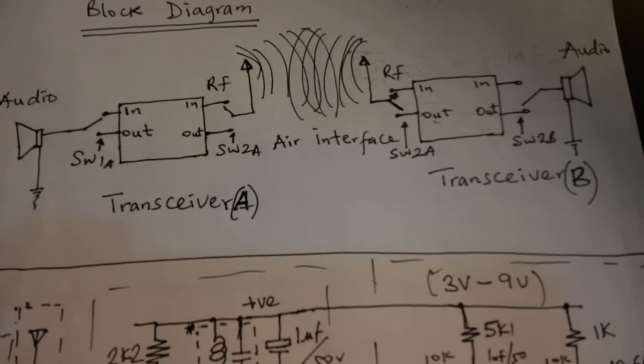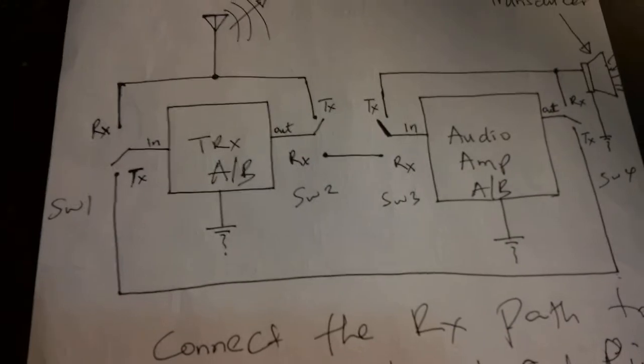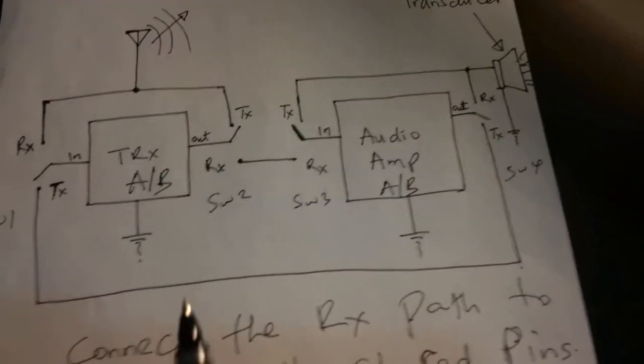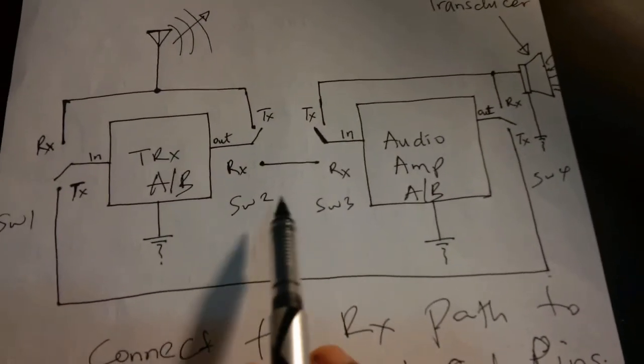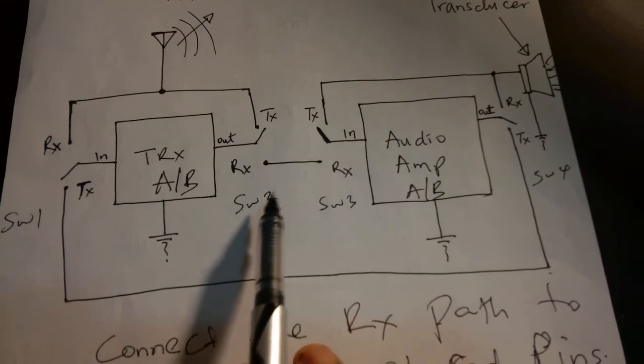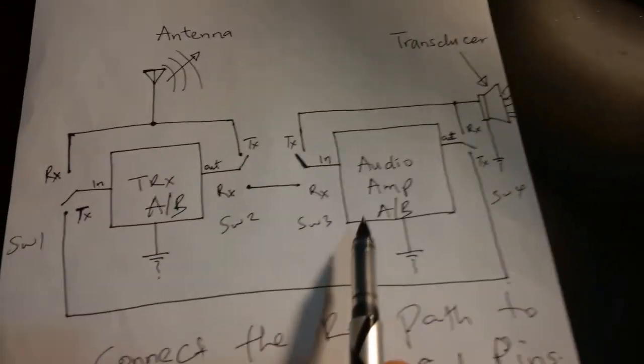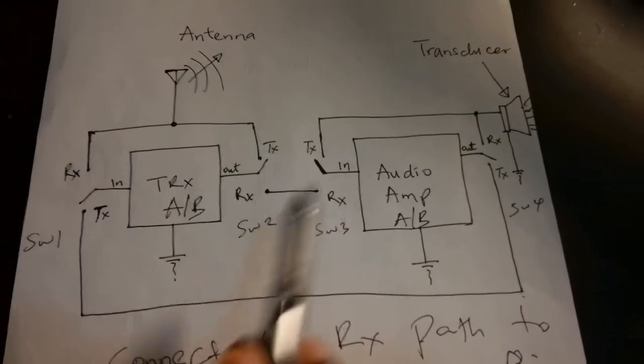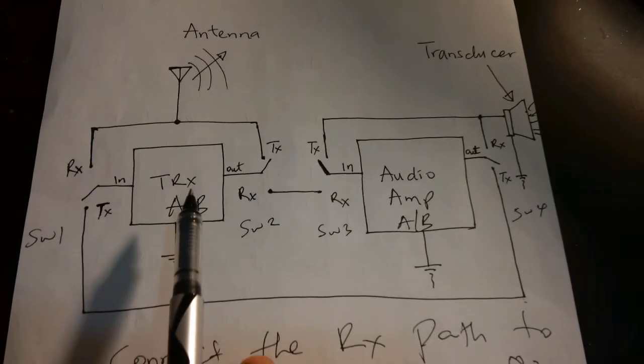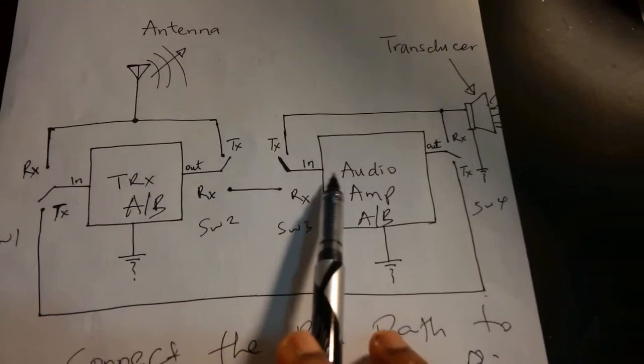Let's look at the extended block diagram and then we'll come and look at the schematic diagram. This is the extended block diagram. I'm just taking one of the transceivers and splitting it out so you can see what it's made up of. For each of the transceivers, you have a transceiver and an audio amplifier.